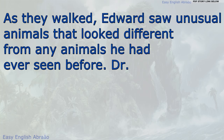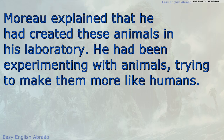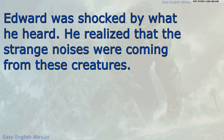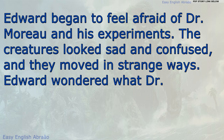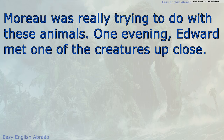As they walked, Edward saw unusual animals that looked different from any animals he had ever seen before. Dr. Moreau explained that he had created these animals in his laboratory. He had been experimenting with animals, trying to make them more like humans. Edward was shocked by what he heard. He realized that the strange noises were coming from these creatures. Edward began to feel afraid of Dr. Moreau and his experiments. The creatures looked sad and confused, and they moved in strange ways. Edward wondered what Dr. Moreau was really trying to do with these animals.